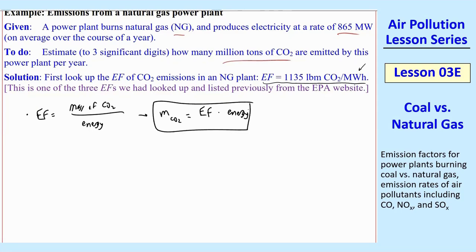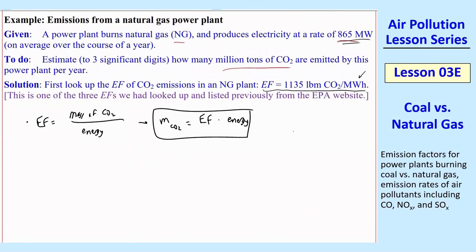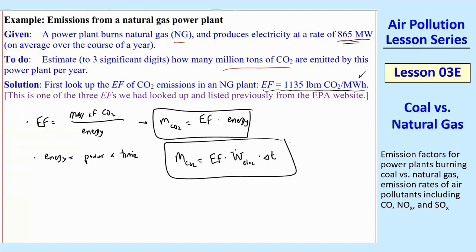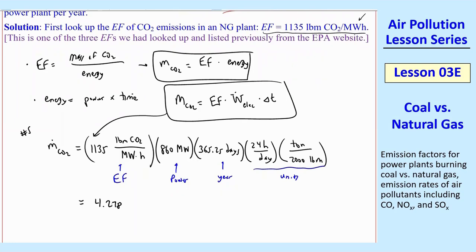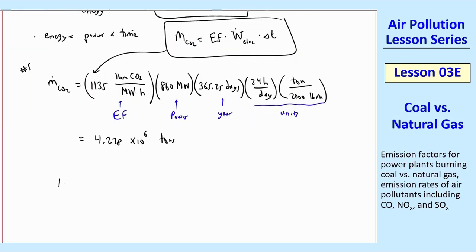We are given the power of our plant — 865 megawatts. That's power, and remember that energy equals power times time, so power is a rate of energy. Therefore, we can write that M_CO2 equals the EF times W-dot (the electrical power produced by the plant) times delta T. In this case, we're interested in one year. Plugging in the EF, the plant power, and one year with unit conversions, I get 4.278 × 10⁶ tons. So the answer is 4.28 million tons of CO2 per year.